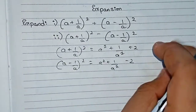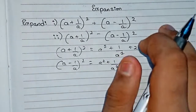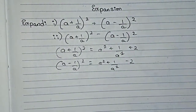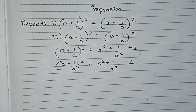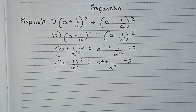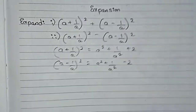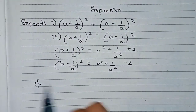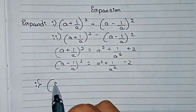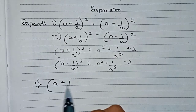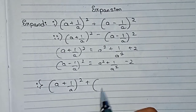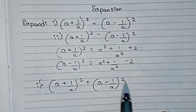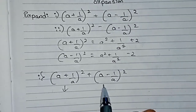With these two identities we will solve these two questions. I have made a complete video on the standard formulas on expansion — the link will be in the description, you can check it. Question number one says: (a + 1/a)² + (a - 1/a)².